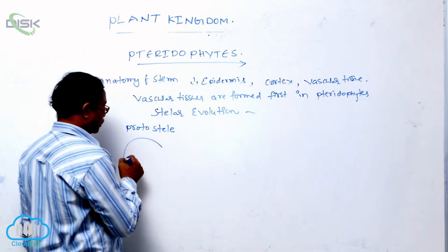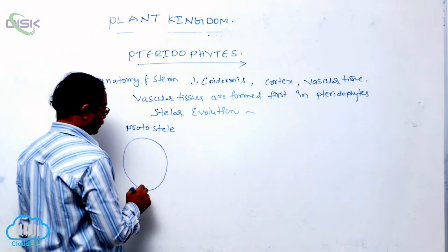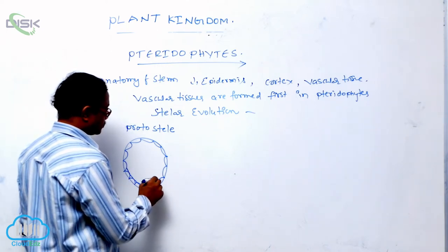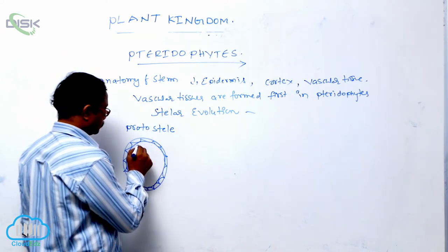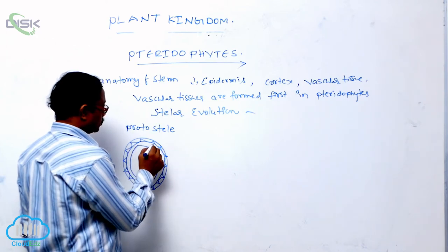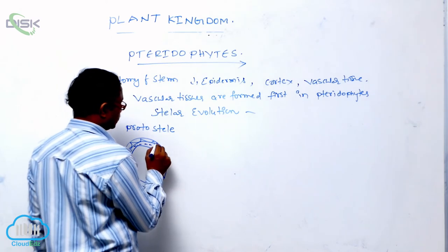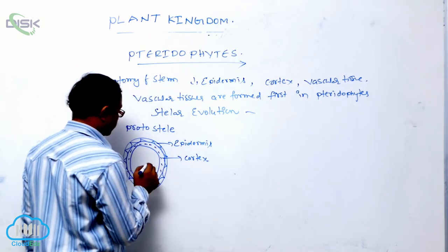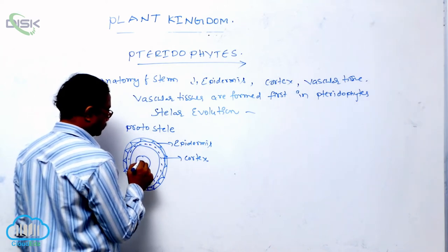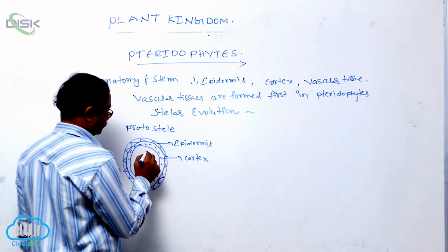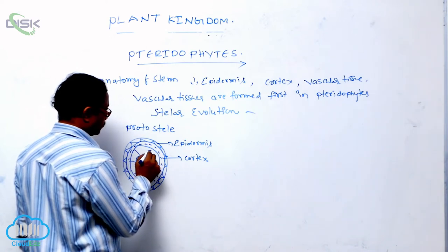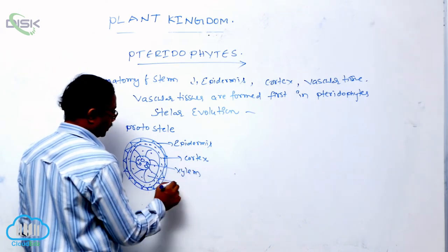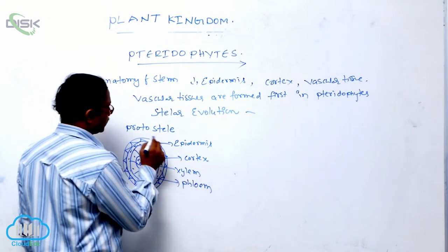What is the meaning of the protostele? Outside is known as the epidermis. After the epidermis it is known as the cortex. Inside that, at the center, it is known as the xylem, and it is surrounded by the phloem. That is known as the protostele — it is the first stele.